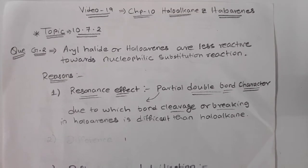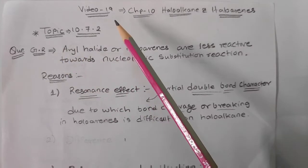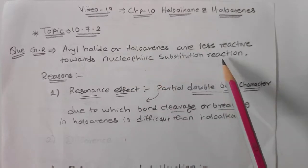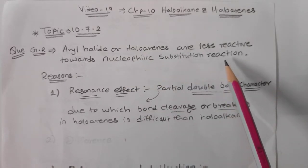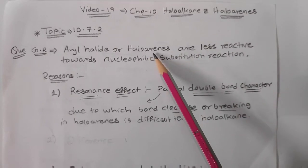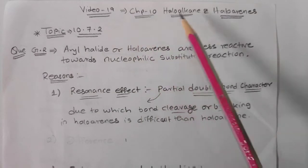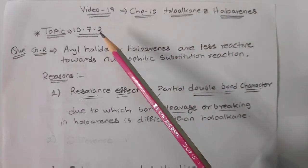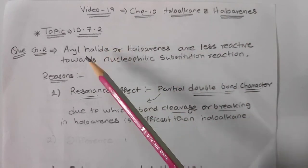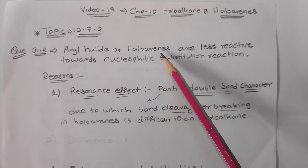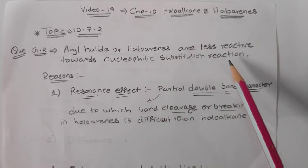This is Joy Varghese from Uncovering Chemistry. In this topic we are going to study about why nucleophilic substitution reactions are difficult in haloarenes. This is Video 19, Chapter 10, Haloalkane Haloarenes, Topic 10.7.2. The question asked is: why are aryl halides, or haloarenes, less reactive towards nucleophilic substitution reaction?